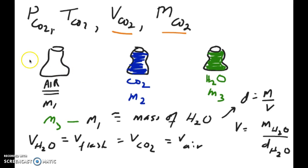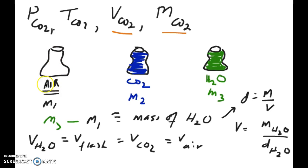The question is: how do I get that mass of the empty flask? In order to get the mass of the empty flask, I have to take M1 — which is the mass of the flask with air in it — and subtract out just the mass of air. So then the question is: how do I get the mass of air in this flask right here?